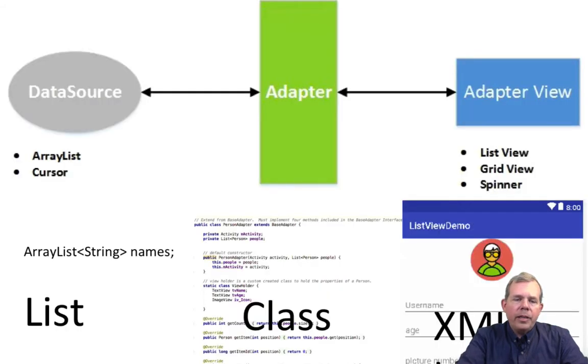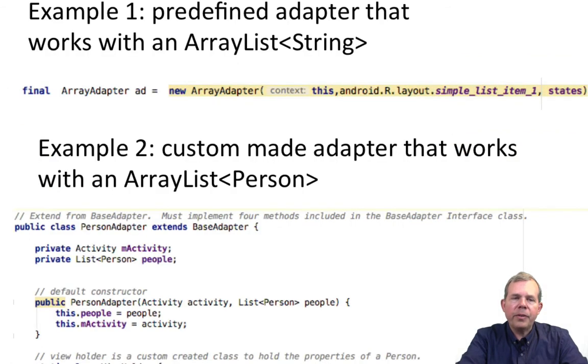So what it looks like then in real life is that you have an array list likely. And the simplest one is just an array list of type string. And then on the right side you're going to have this XML code. And in the middle is the adapter. And so we're going to take a look at two different lessons on how to build these adapters.